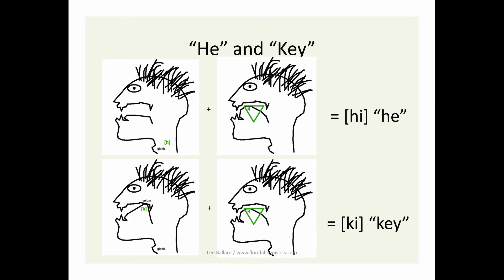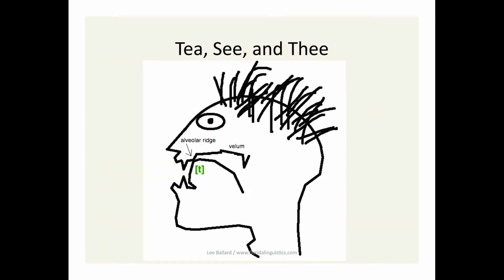Now let's look at another example with three more words: T, C, and V. For T, there is a complete stoppage of air at the alveolar ridge. English speakers pronounce T at the beginning of a syllable as an alveolar stop.